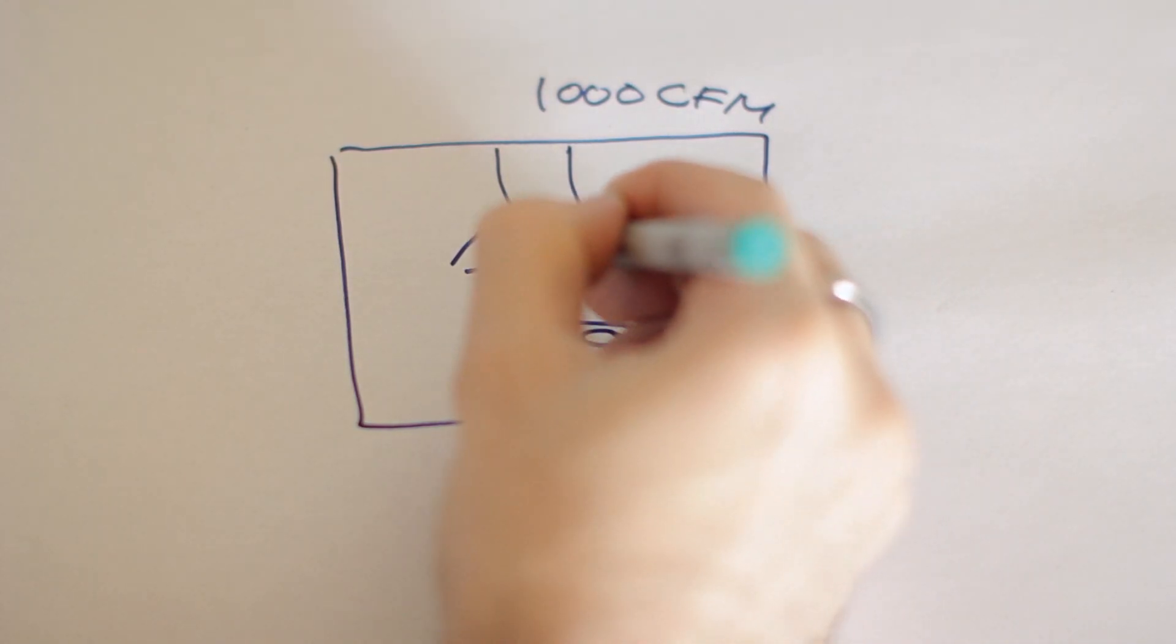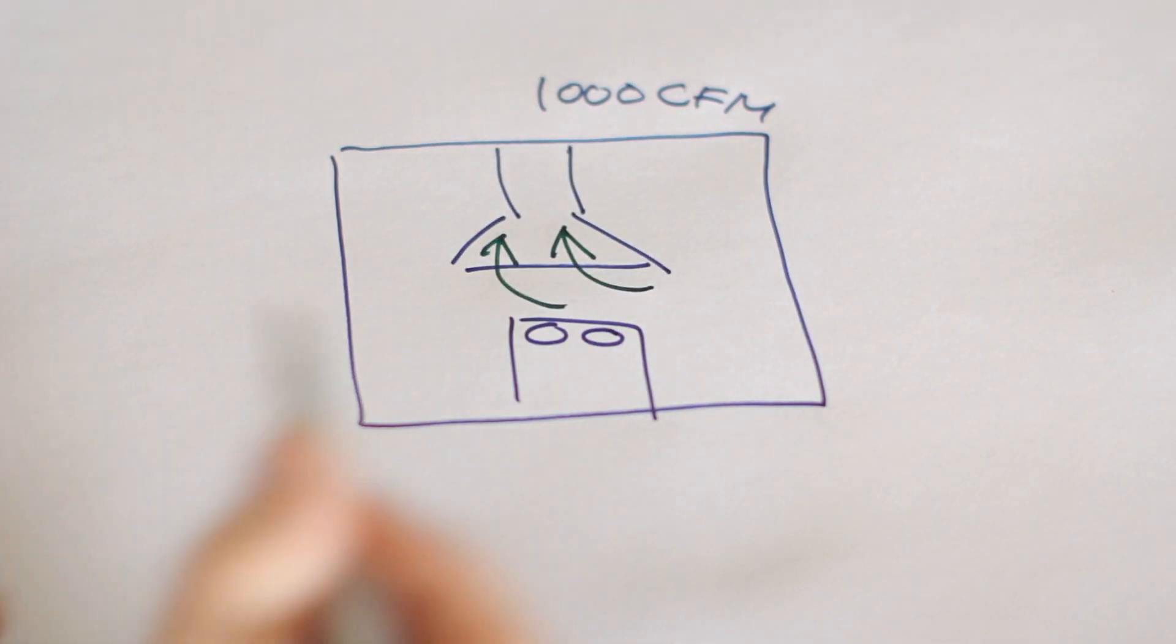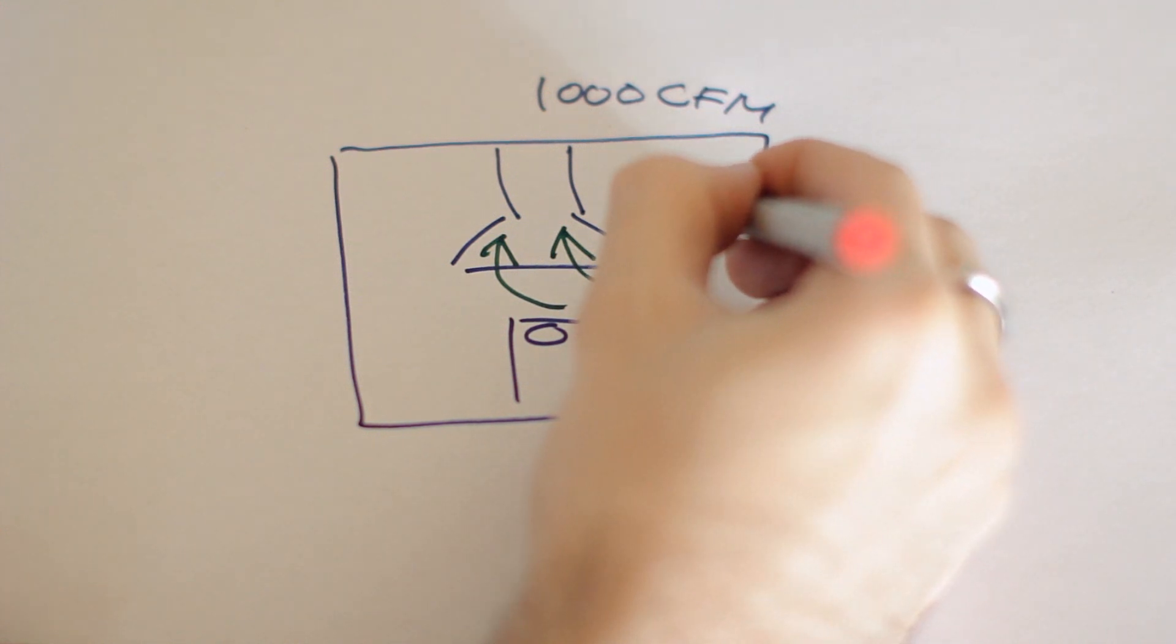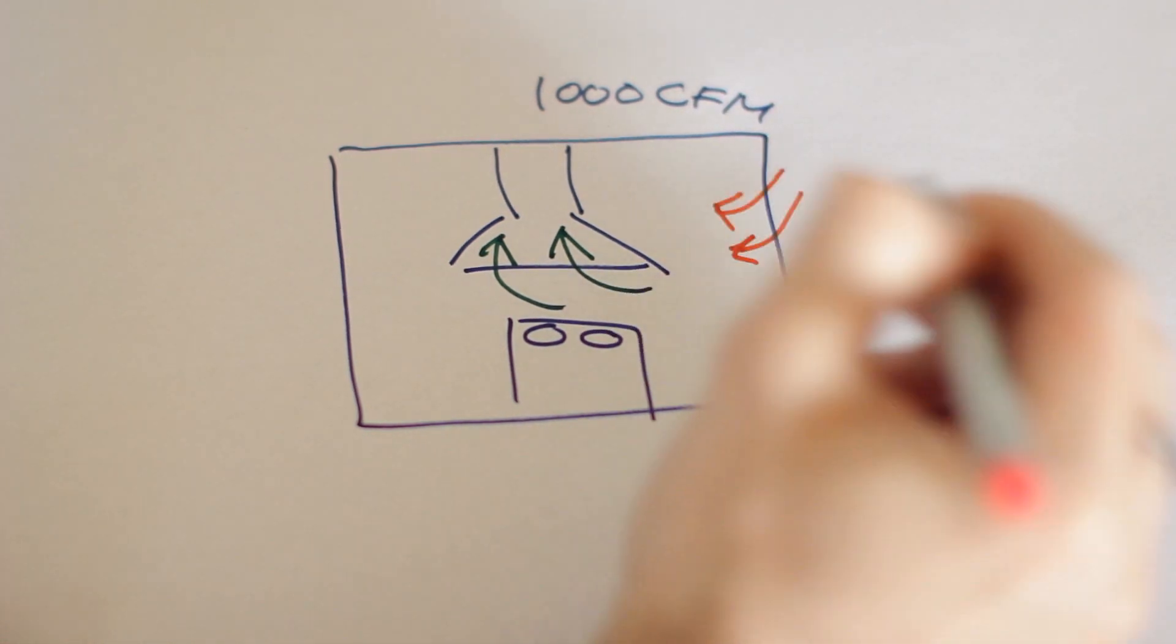Every time an exhaust fan removes air from your house, an equal volume of air must return. The air that enters the cracks in a home's envelope to replace exhausted air is called makeup air.